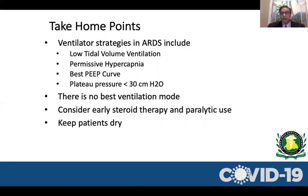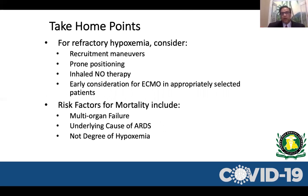Take-home points for ARDS: common ventilator strategies include low tidal volume, high PEEP keeping above the lower inflection point, inverse ratio ventilation, permissive hypercapnia, and plateau pressure less than 30. There is no single best ventilation mode — you can use volume control, pressure control, or combined VCPC mode. Recruitment maneuver only if severely hypoxemic. Proning has a very good role. Inhaled nitric oxide especially if pulmonary hypertension is present. Consider early ECMO if facility is available.